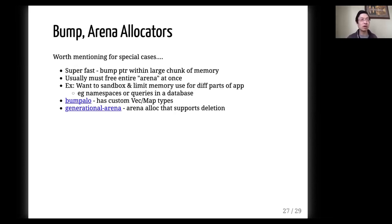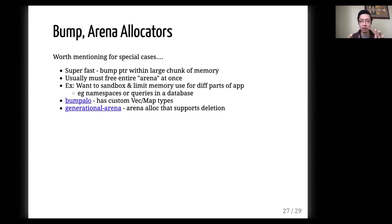For certain use cases, you can use bump arena allocators. This is useful when you want to sandbox some memory for a part of your app — for example, for queries in a database or certain namespaces. You allocate memory by bumping a pointer and then free it all at once. There is a crate called Bumpalo which is really great for this and can help when you want to control memory use.